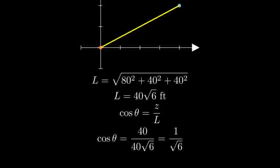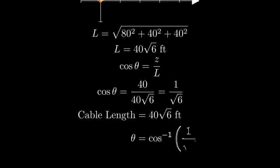Which simplifies to 1 over the square root of 6. Therefore, the cable length is 40 times the square root of 6 feet, and the angle between the cable and the positive Z axis is the inverse cosine of 1 over the square root of 6.